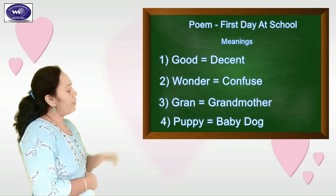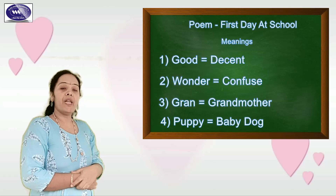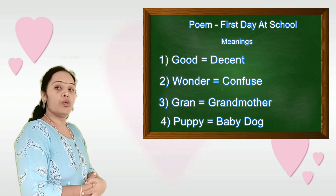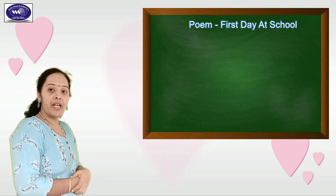Fourth one: puppy. Puppy means baby dog. And the spelling is P-U-P-P-Y, puppy. B-A-B-Y, baby. D-O-G, dog. Puppy means baby dog.